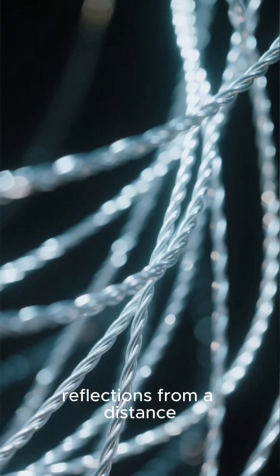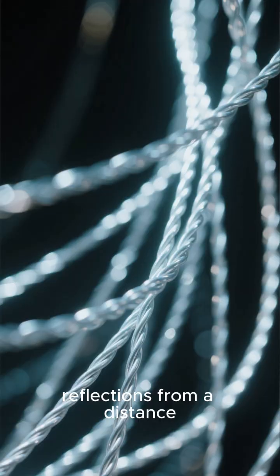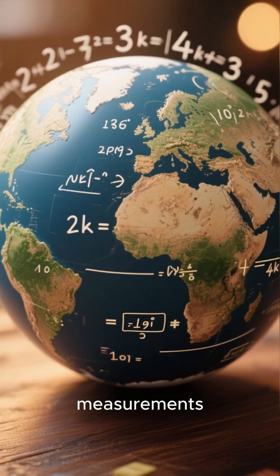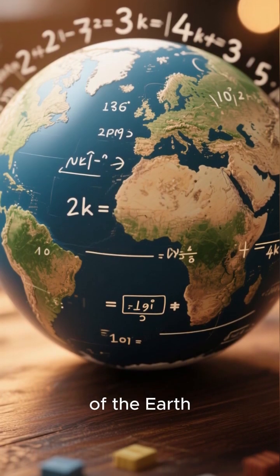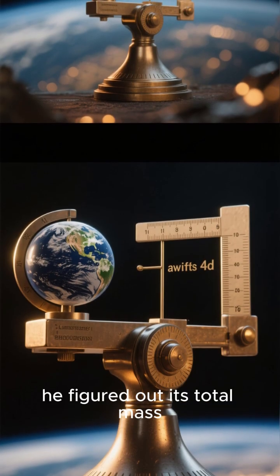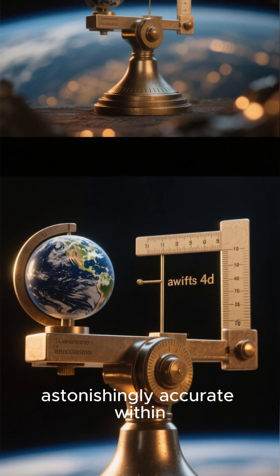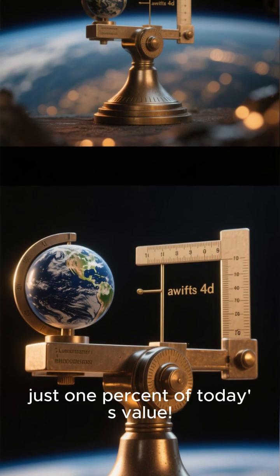He had to observe the subtle twisting of the wire using light reflections from a distance. Through these painstaking measurements, he calculated the density of the Earth. From there, he figured out its total mass, and his result was astonishingly accurate within just one percent of today's value.